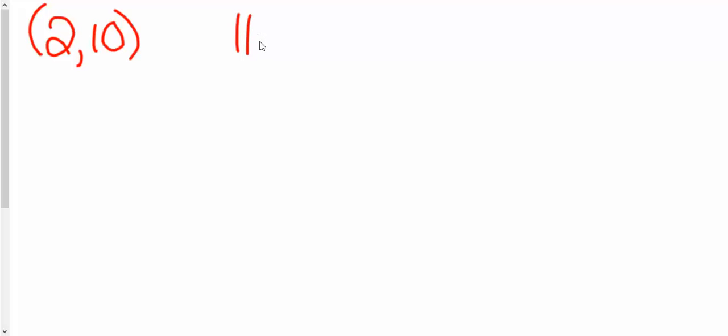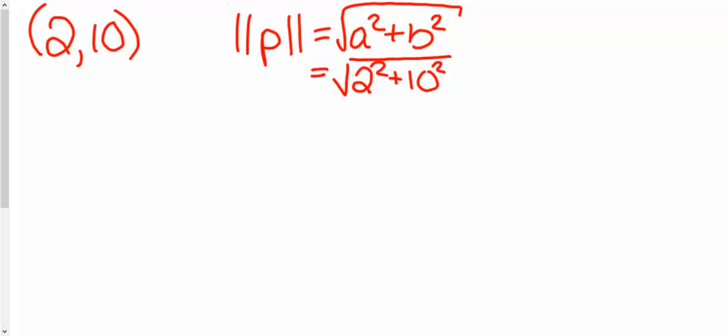And remember, the magnitude, I'm just going to use P for a point, is a squared plus b squared, and it's the square root of this. So in other words, the square root of 2 squared plus 10 squared, which is the square root of 104, which if you're doing it in a calculator is approximately 10.2.